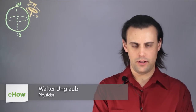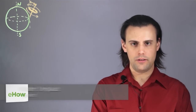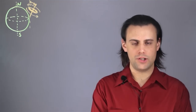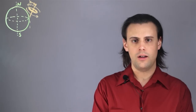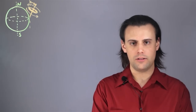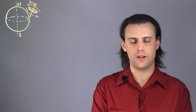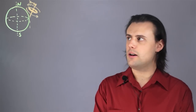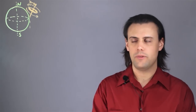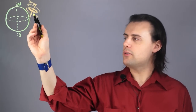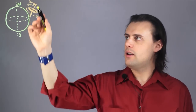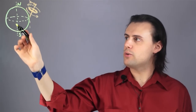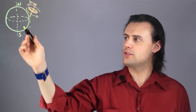Hello, my name is Walter Unglaub and this is gyrocompass theory. A gyrocompass works on the principle of a gyroscope. It's different than a conventional magnetic compass, because a magnetic compass depends on the external magnetic field generated by the Earth, but a gyrocompass doesn't need that. All you need is a gyroscope, which is some mass spinning about a certain axis relative to the axis of rotation of the planet you're on, such as Earth.